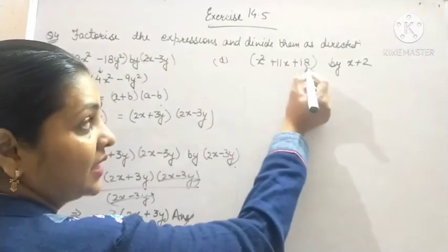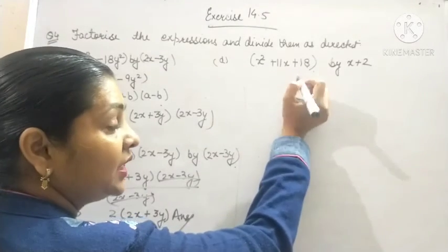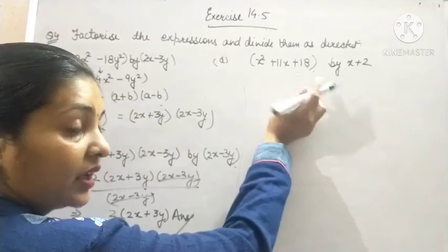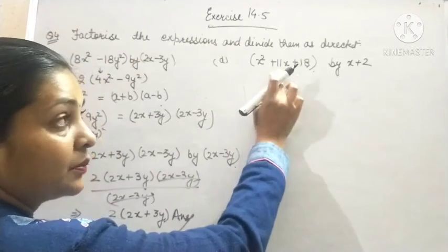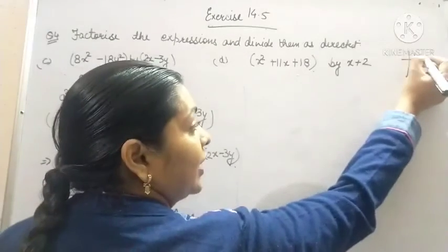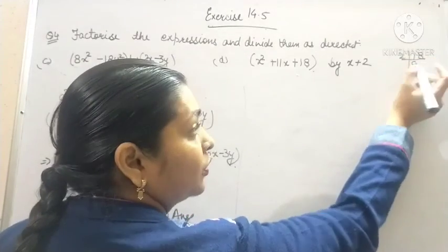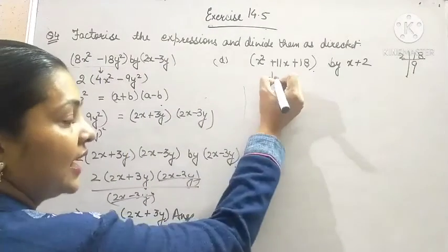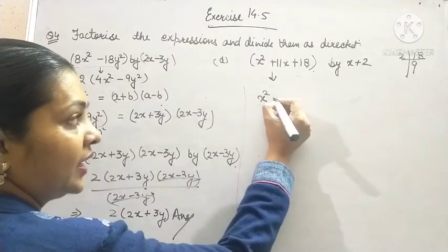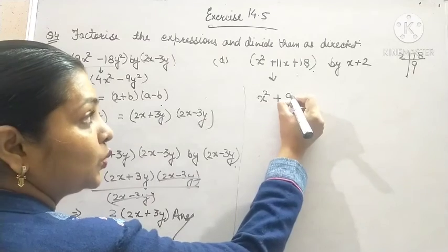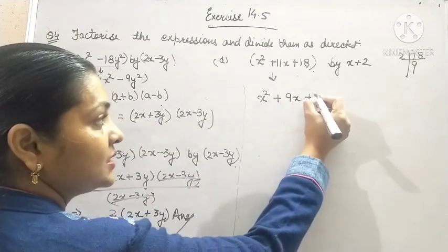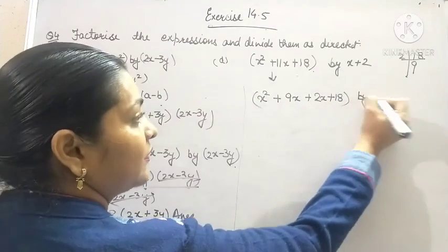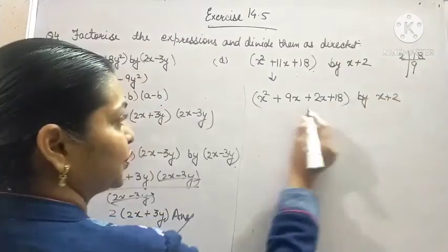Now, the product of extremes is 18. That means we need to factorize 18 in a manner such that the product is 18 and sum is 11. When you divide 18 by 2, you obtain 9. 9 plus 2 is 11. So, this expression can be factorized as x square plus 9x plus 2x plus 18. This is to be divided by x plus 2.